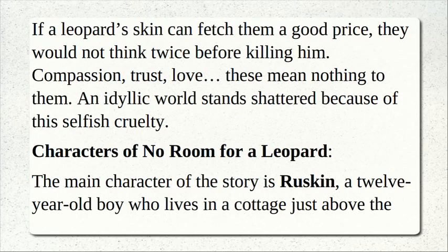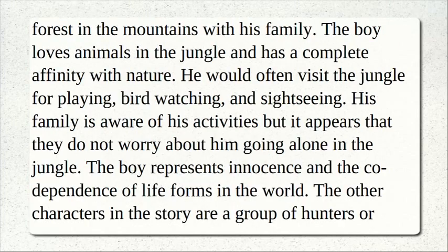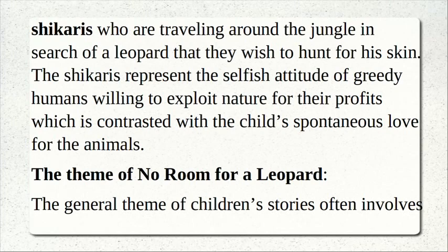The main character of the story is Ruskin, a 12-year-old boy who lives in a cottage just above the mountains with his family. He loves animals in the jungle and has a complete affinity with nature. He would often visit the jungle for playing, bird-watching, and sightseeing. The boy represents innocence and the co-dependence of life forms in the world. The other characters are a group of hunters or Shikaris travelling in search of a leopard for his skin. The Shikaris represent the selfish attitude of greedy humans willing to exploit nature for profit, contrasted with the child's spontaneous love for animals.